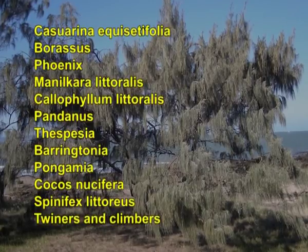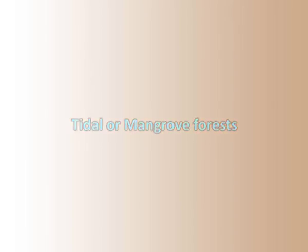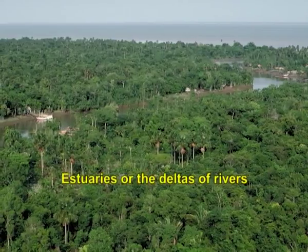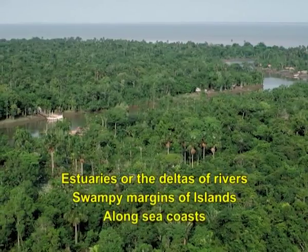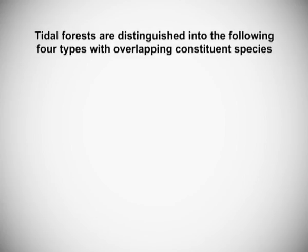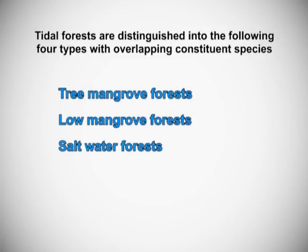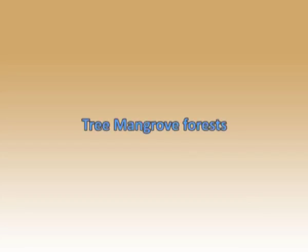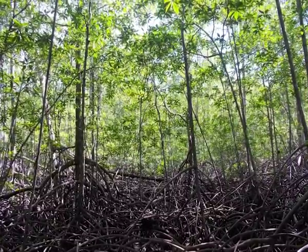Tidal or Mangrove Forests grow near the estuaries or deltas of rivers, swampy margins of islands, and along sea coasts. The soil is formed of silt, silt loam, or silt clay and sand. The plants are typical halophytes characterized by prop roots, well-developed pneumatophores for support, and viviparous germination of seeds. Tidal forests are distinguished into four types: Tree Mangrove Forests, Low Mangrove Forests, Saltwater Forests, and Brackish Water Forests. These forests occur on both east and west seacoasts.